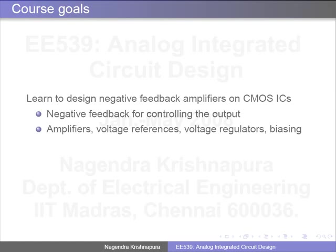What is the goal of the course? Analog IC design involves a whole bunch of circuits, but we cannot go through all of them. The emphasis in this course is on depth, not breadth — it is not a survey of 100 different kinds of circuits. It is about how to design one particular thing in great detail, and using that you can learn other things easily. What we try to do is learn how to design negative feedback amplifiers on CMOS ICs. We choose CMOS, which is the dominant technology of the day.